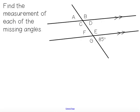Okay, then we have the angles in a transversal, and the question is, find the measurement of each of the missing angles. So A, B, C, D, E, and F.